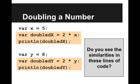The problem we're going to look at now is the problem of doubling a number. If we look at this code here, I write var x equals 5. I've declared a variable x and it has the value 5. Now I write var doubled x equals 2 times x. In doubled x, I'm storing twice the value of x, and then I'm printing out that value.